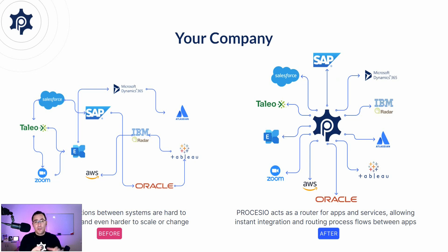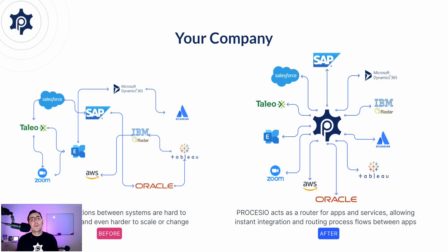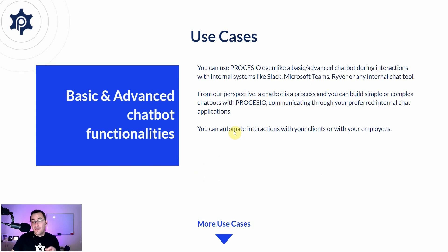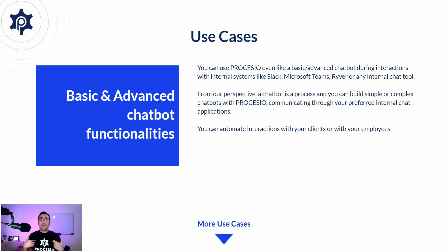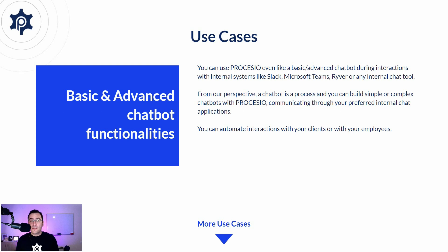When you bring Procesio in and put it at the middle of those software systems, you integrate each of them with Procesio and do the connections inside Procesio. So Procesio acts like a router inside your company — a router for applications, for data, and for processes. You could also do basic and advanced chatbot functionalities; as the name says, Procesio does processes, and for us everything is a process — even a chatbot.